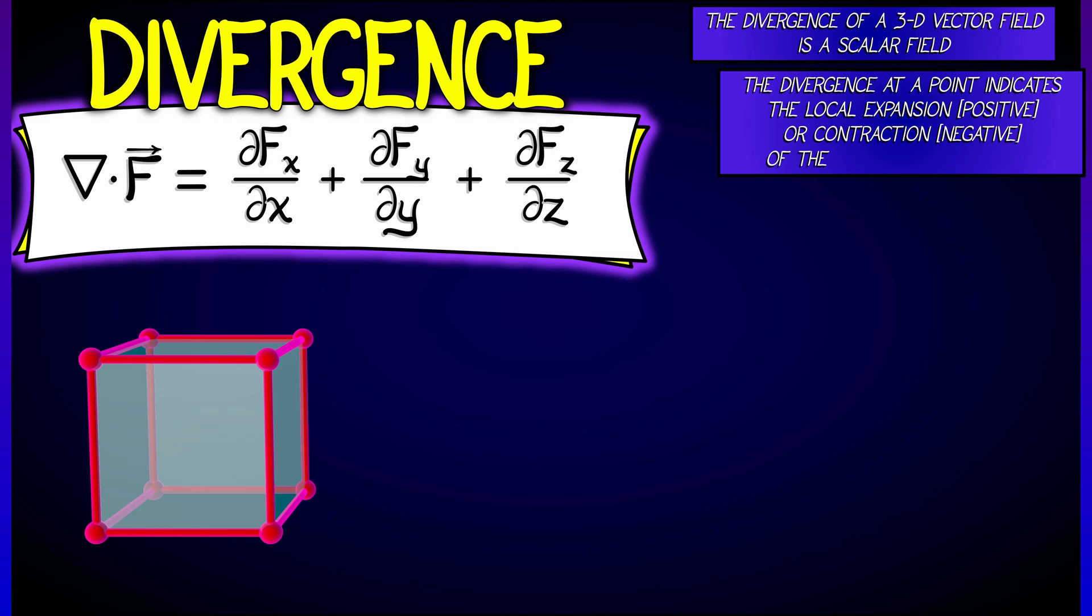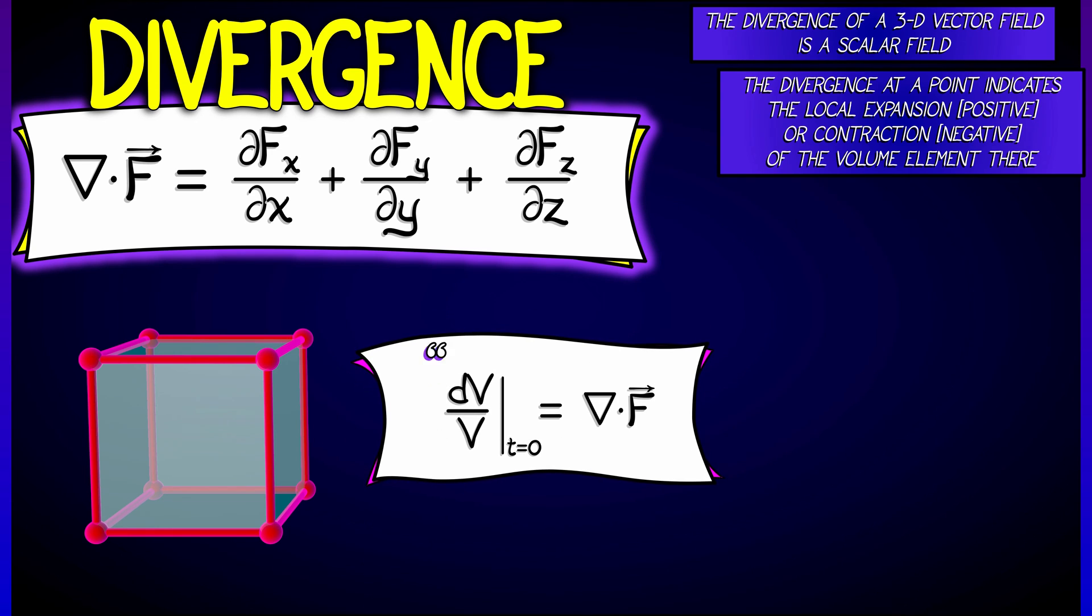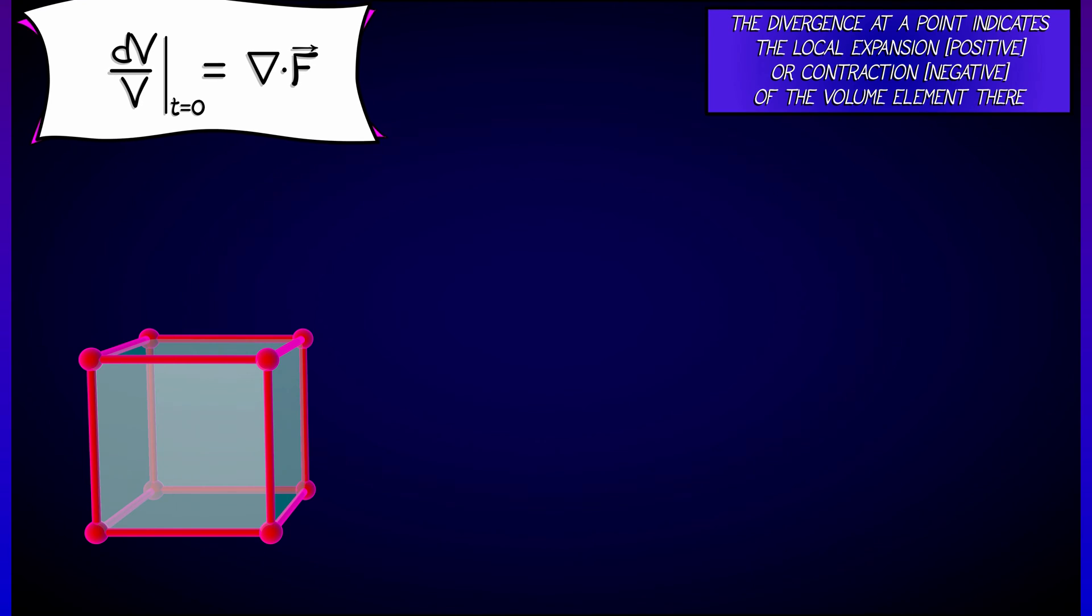Now what does this mean? This divergence measures the local expansion or contraction of the volume element at a given point. Positive divergence is expansion, negative divergence is contraction. One way to think about this is you look at the rate of change of a volume element dv, normalized by the volume v, and then consider what is happening instantaneously at a particular point in space and time.